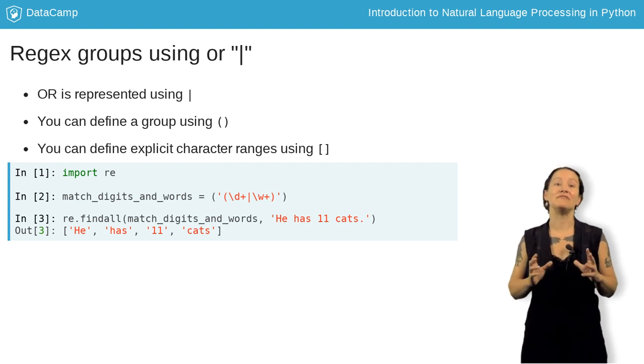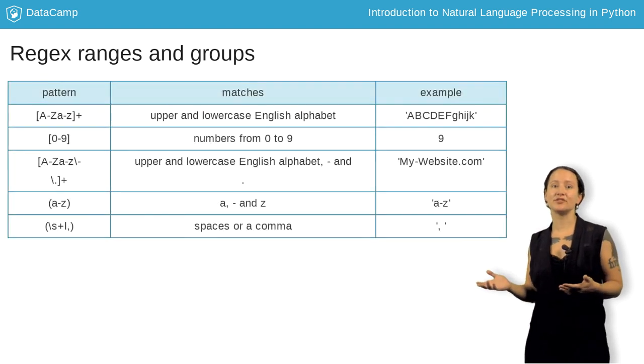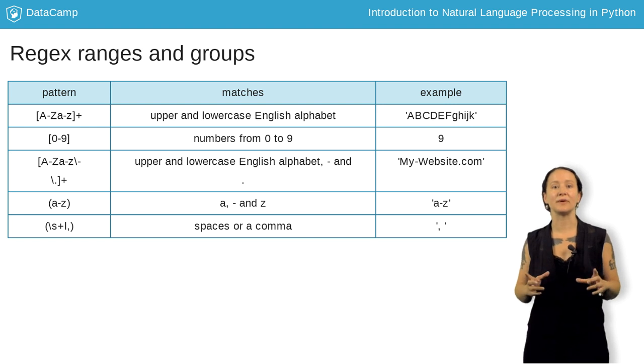Let's take a look at another more advanced topic, defining groups and character ranges. Here we have another chart of patterns, and this time we're using the ranges or character classes marked by the square brackets, and groups marked by the parentheses.